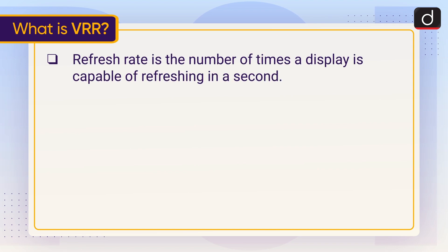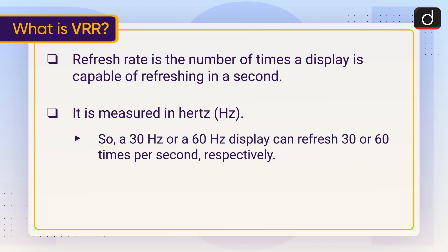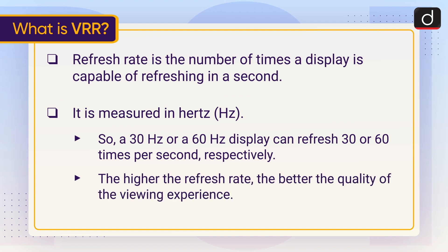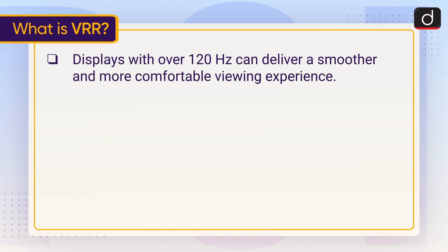Refresh Rate is the number of times a display is capable of refreshing in a second. It is measured in Hertz i.e. Hz. A 30 Hertz or a 60 Hertz display can refresh 30 or 60 times per second respectively. The higher the refresh rate, the better the quality of the viewing experience. Displays with over 120 Hertz can deliver a smoother and more comfortable viewing experience.